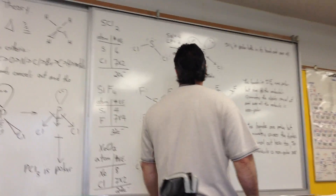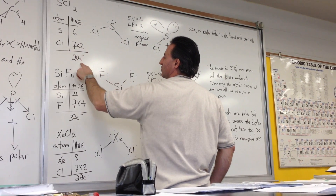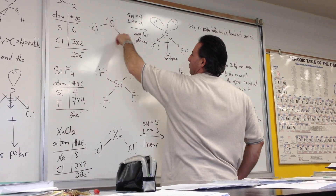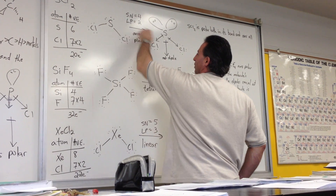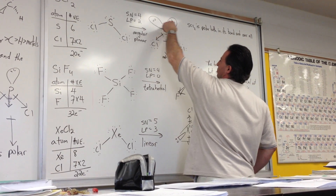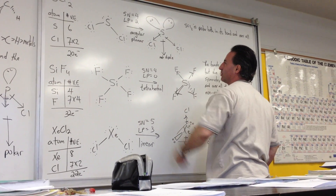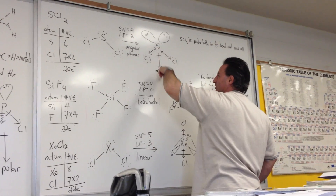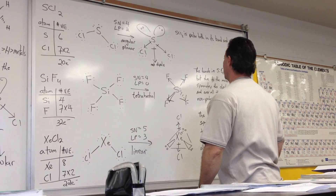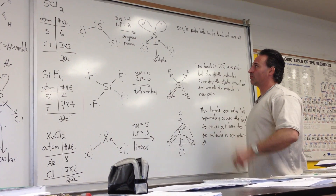The second example is sulfur dichloride, SCl₂. Sulfur has six valence electrons, chlorine has seven, and with two chlorine atoms the total is 20 electrons. The steric number is four — two bonding pairs and two lone pairs — which tells us the molecule is angular or bent. The chlorine atoms are more electronegative than sulfur, so the dipoles point toward chlorine. The resultant dipole points down between the bonding pairs. The bonds are polar, the molecule is not symmetrical, so the dipoles don't cancel, and the molecule is polar overall.